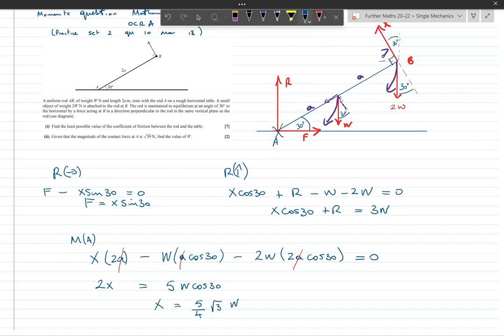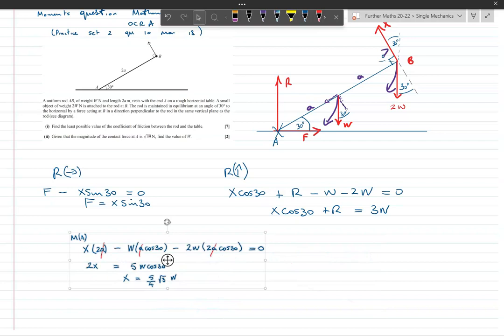So that is going to mean I'm going to be able to substitute my X into this equation here and this equation here, and then I'm going to be able to get F in terms of W and R in terms of W, and then I'm away really.